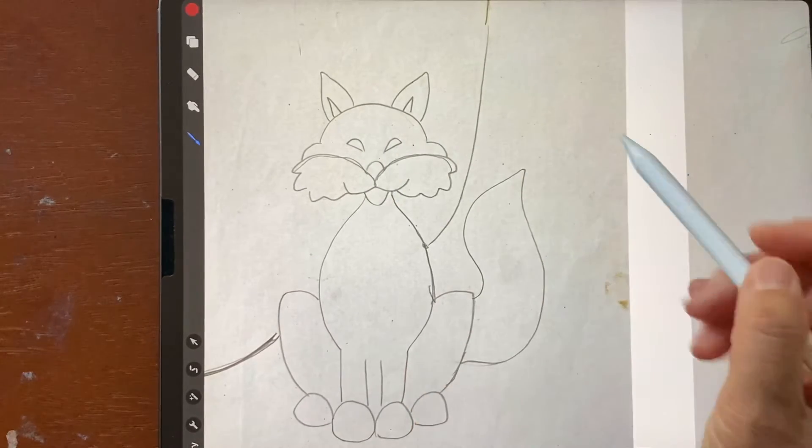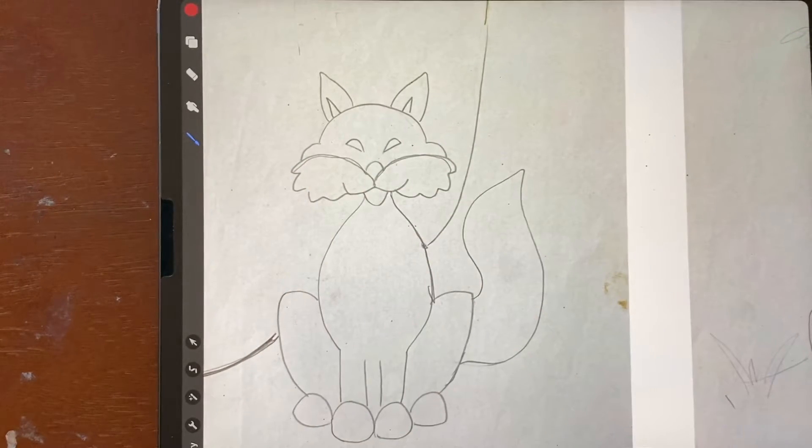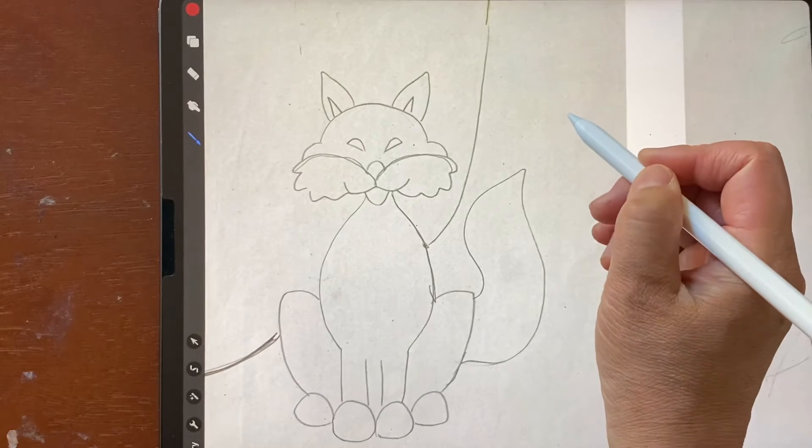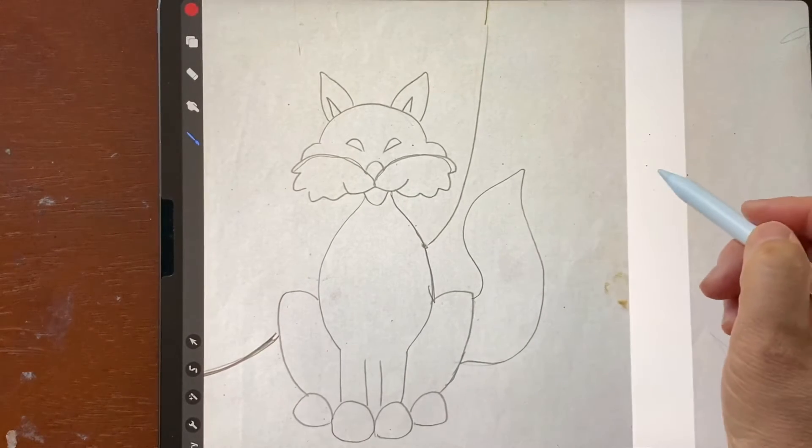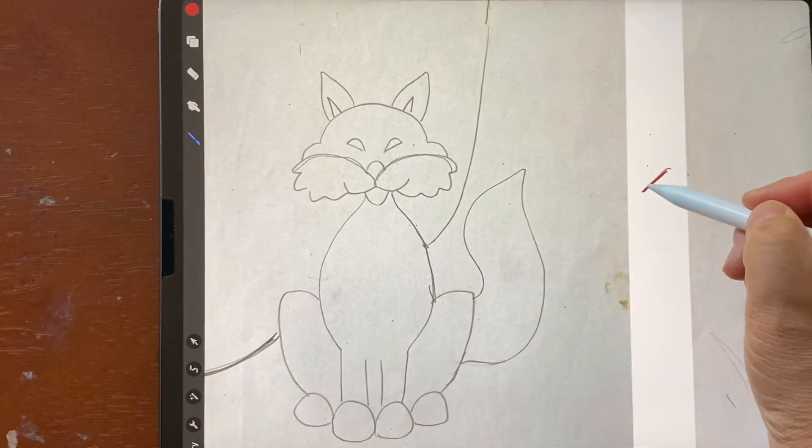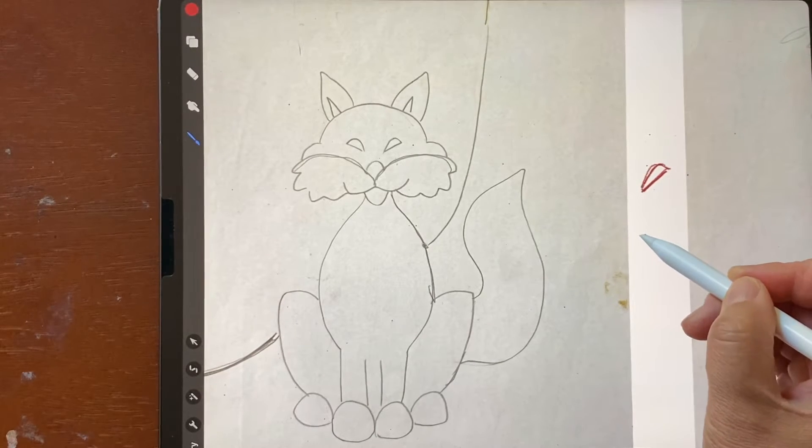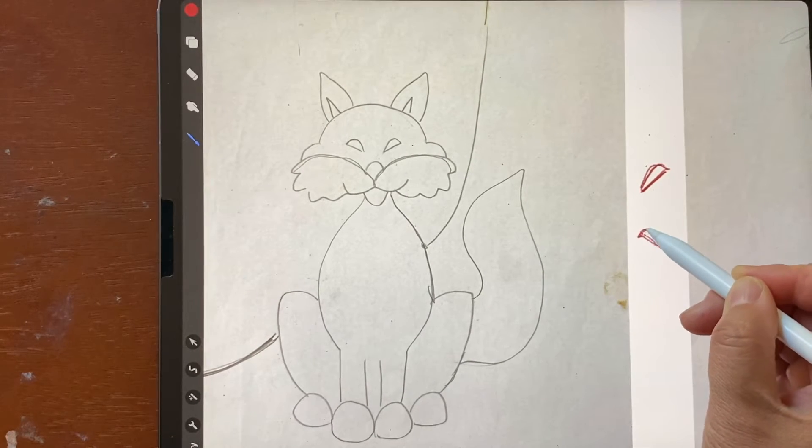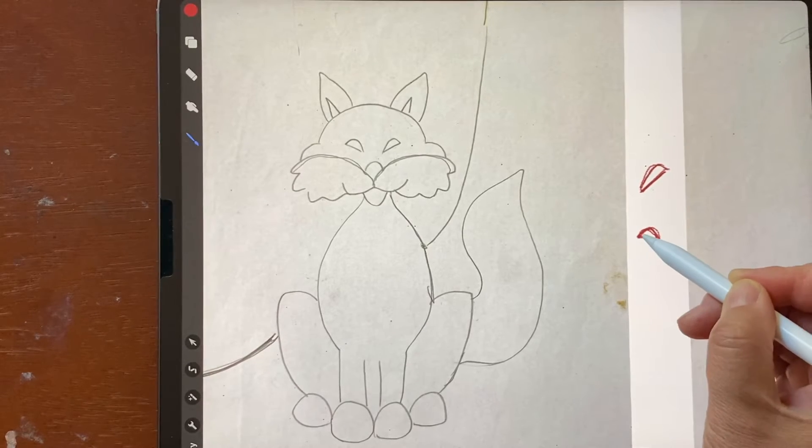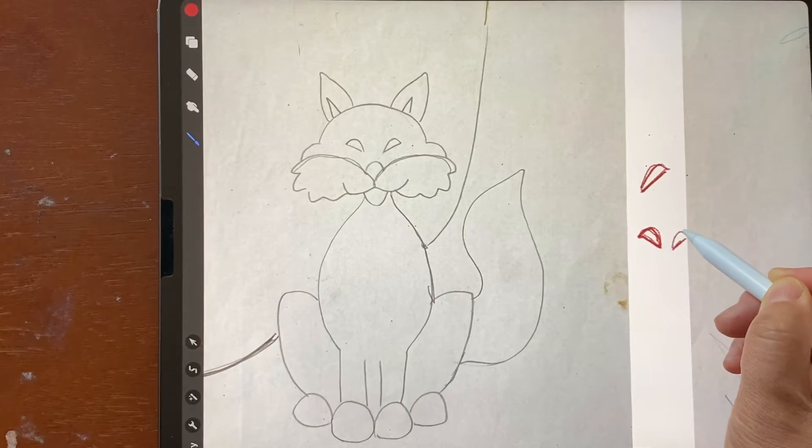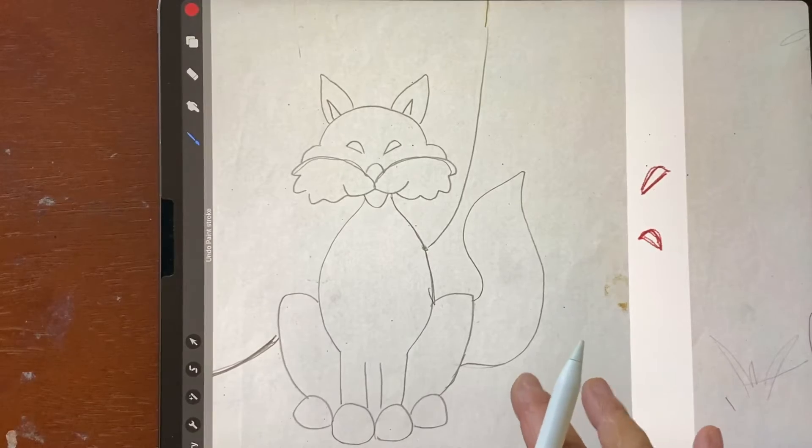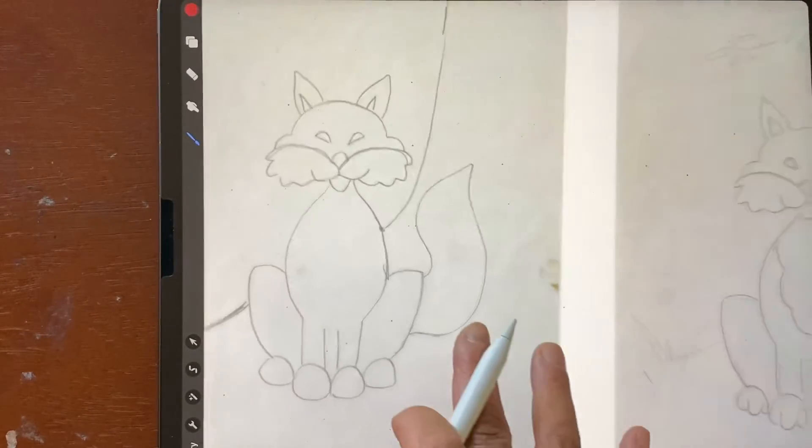Pay attention to the eye. The eye is more like a triangle, so it's straight down here then it's like that. That's one eye, then that's another eye. That's fox eye, skinny triangle shape.